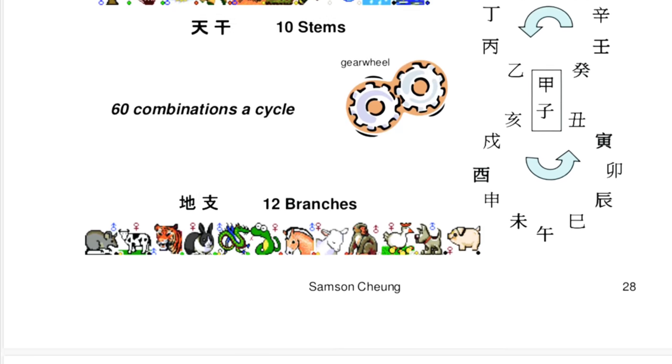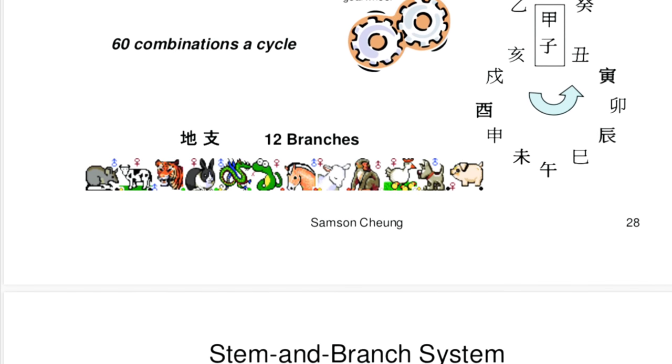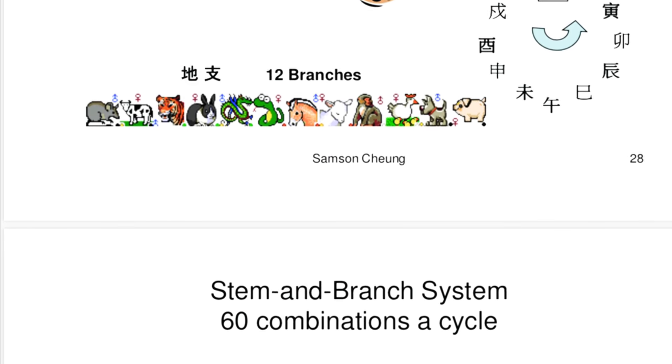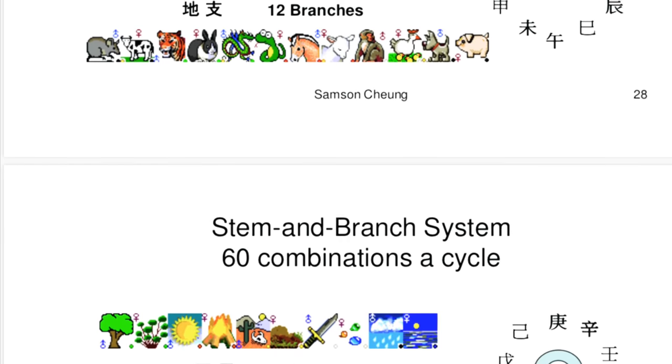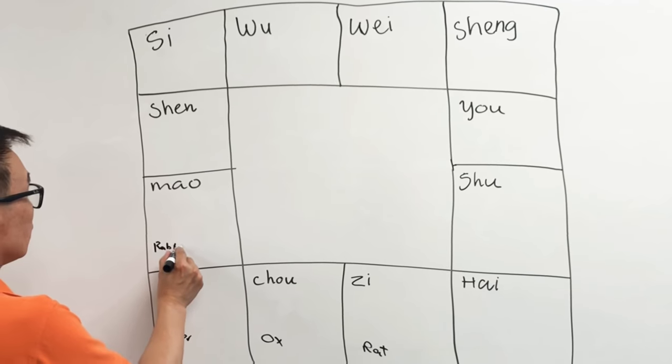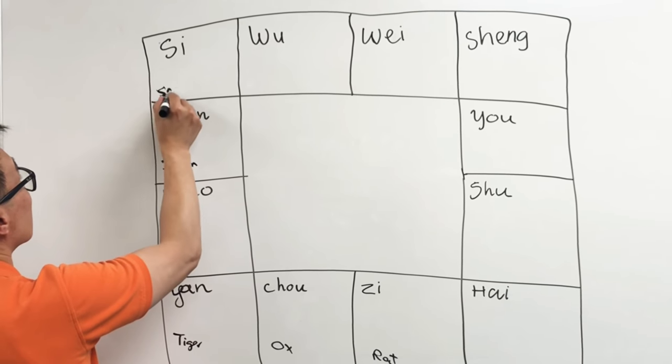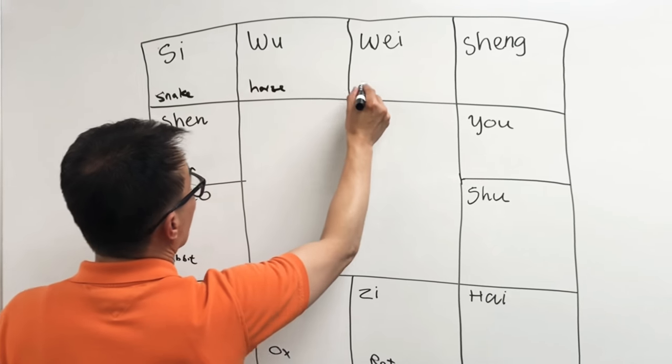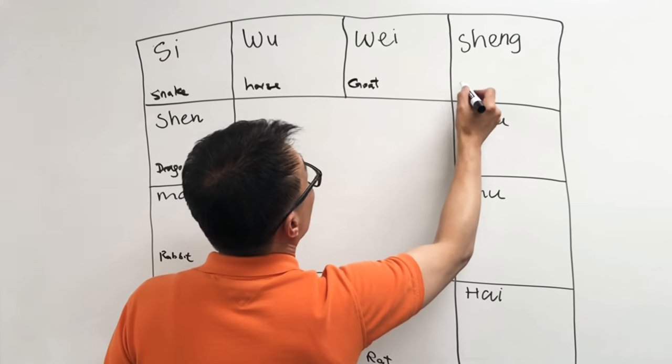Some Americans know about the earthly branches, like the year of the mouse or rat, the year of the ox, and then tiger, then rabbit, and then dragon, and snake.